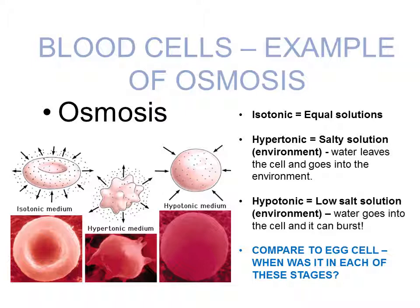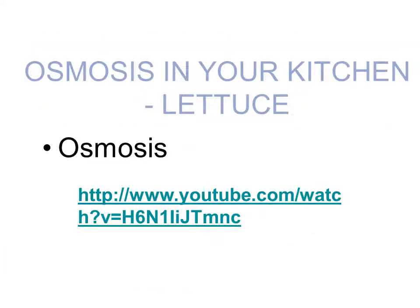Then there's a hypotonic solution. In this case, you have a low salt solution — for example, pure water with absolutely no salt in it, like deionized water. The solution inside the cell is saltier than outside the cell, so water will move from the environment, from this hypotonic solution, into the cell. In that case, the cell will expand and can even burst. When you're doing the egg experiment, compare these stages to what you observe. Later on, I'll be showing you how osmosis works in your kitchen.